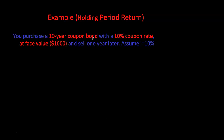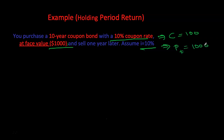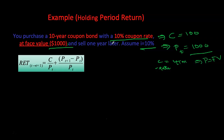Let's do a few examples to understand the calculation of return for holding different types of bonds. In this example, I have a 10-year bond with a face value of $1,000 and a 10% coupon rate, so the coupon payment is $100. I purchased this bond at a 10% interest rate. Since the coupon rate equals the interest rate at purchase, the purchase price equals face value: $1,000. The return for one year will depend on the coupon payment, the selling price, and the purchase price.